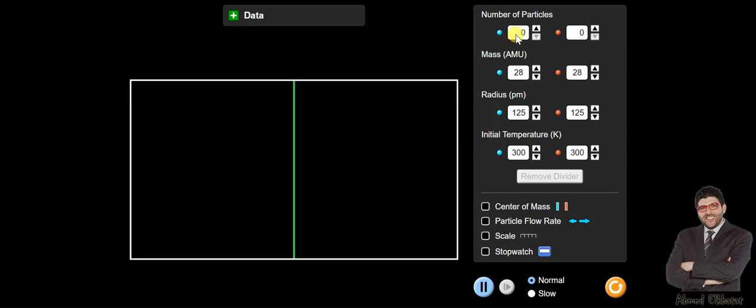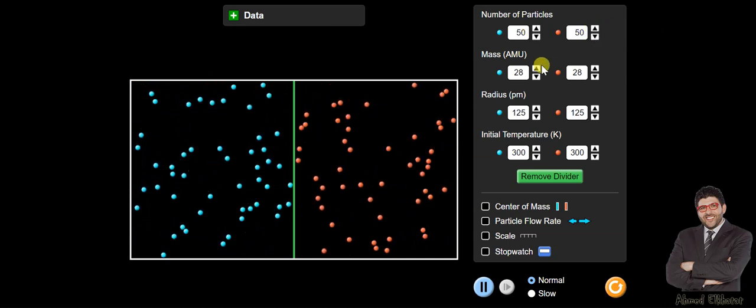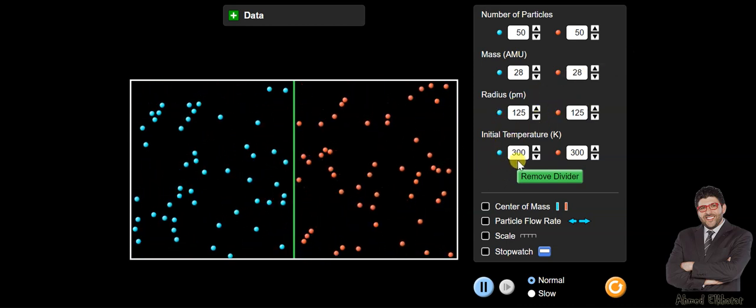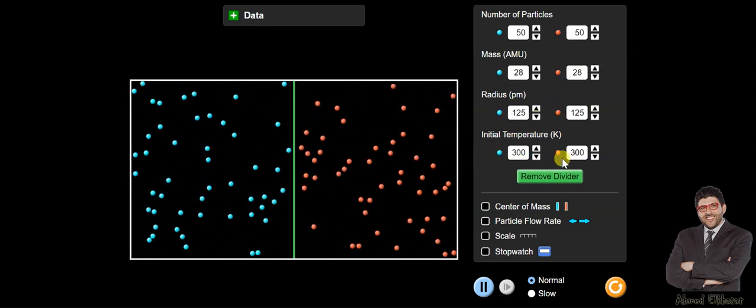So let's check this. We can make the number of particles the same number, we can take 50 here and also 50 here, and the mass, same mass, radius, initial temperature should be the same, everything is the same.